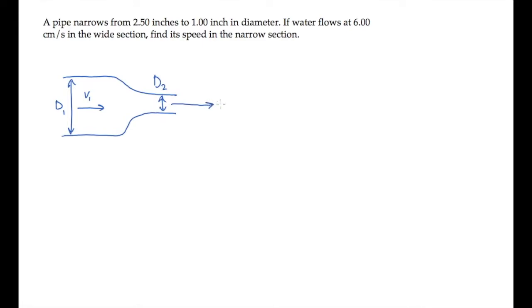We can do this using the continuity equation, which tells us that the volume flow rate through the pipe is constant, so a1v1 equals a2v2, where the a's are the pipe's cross-sectional areas.